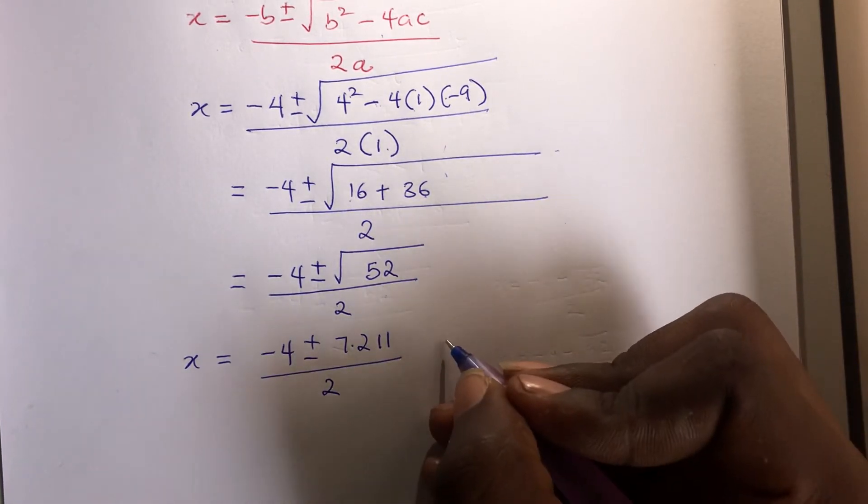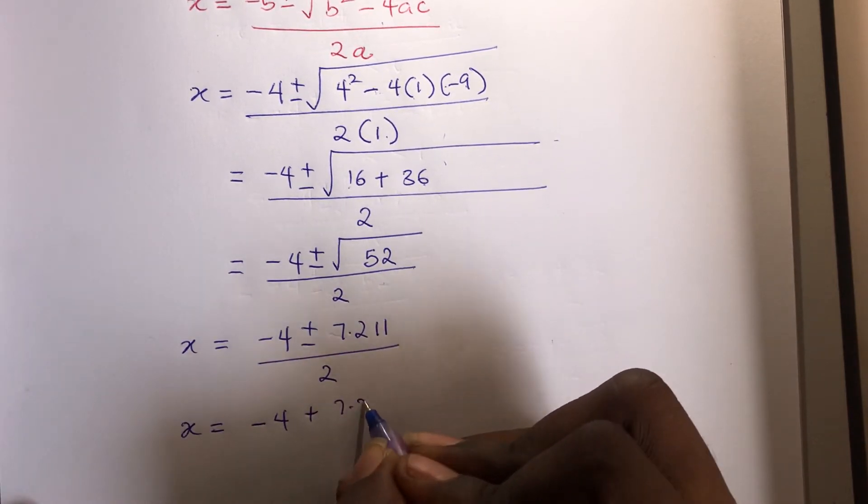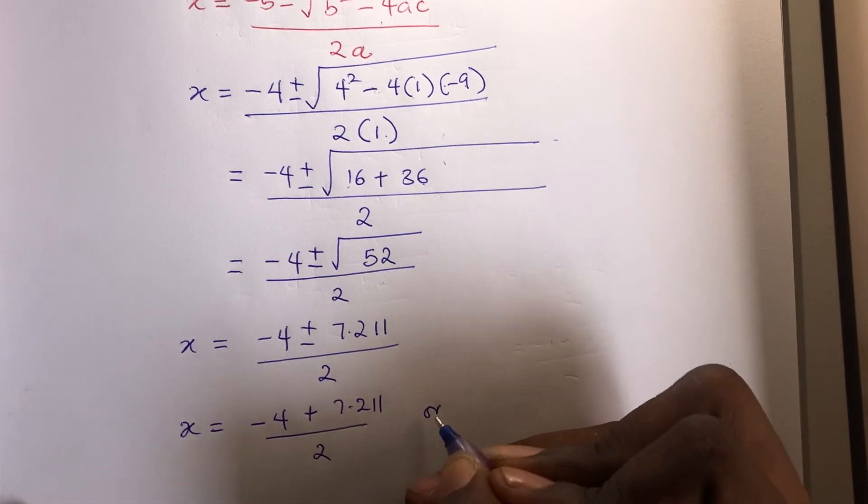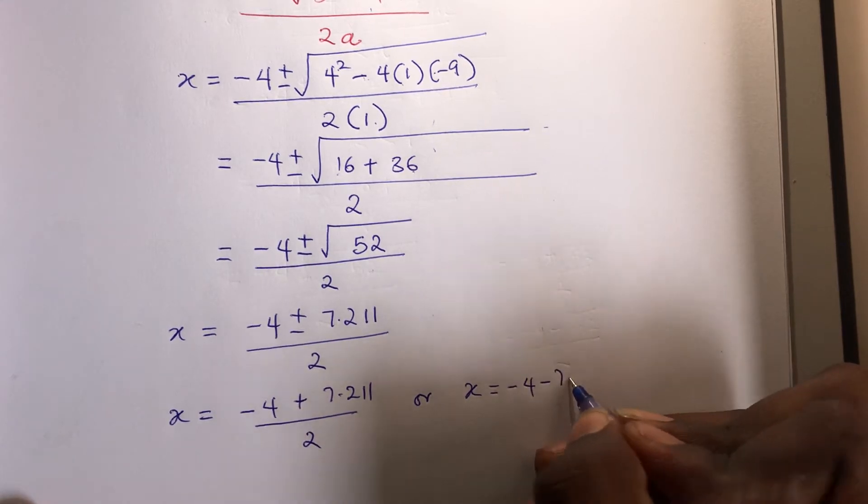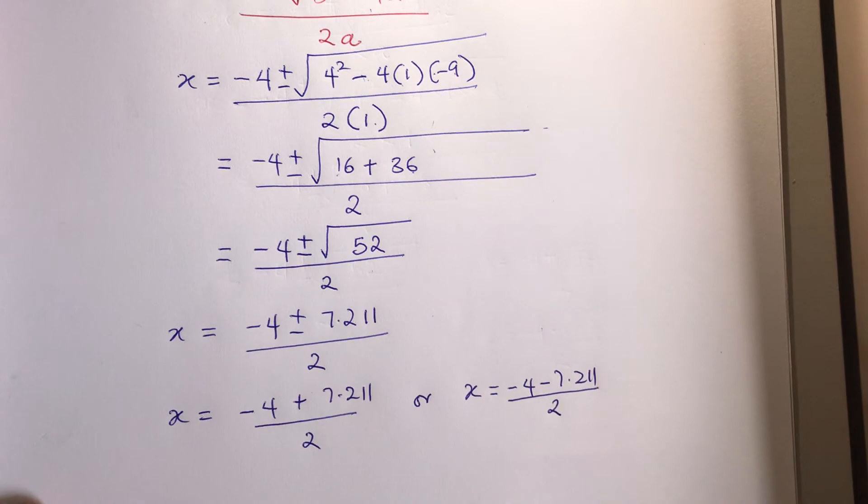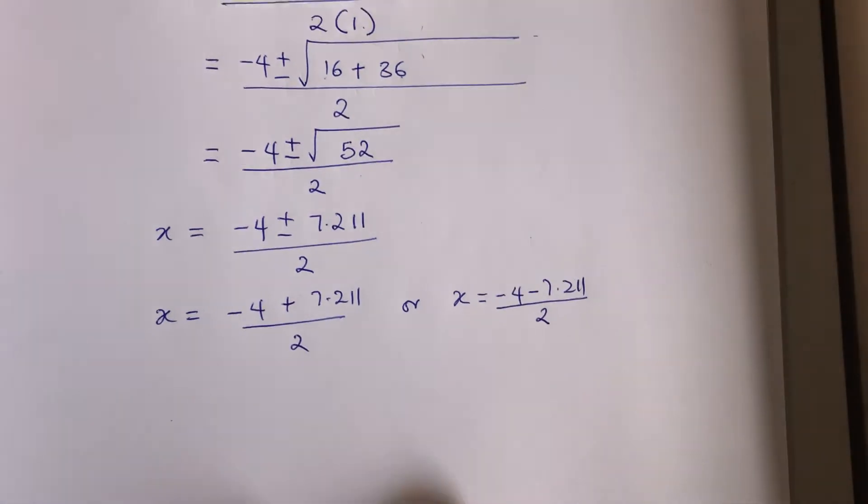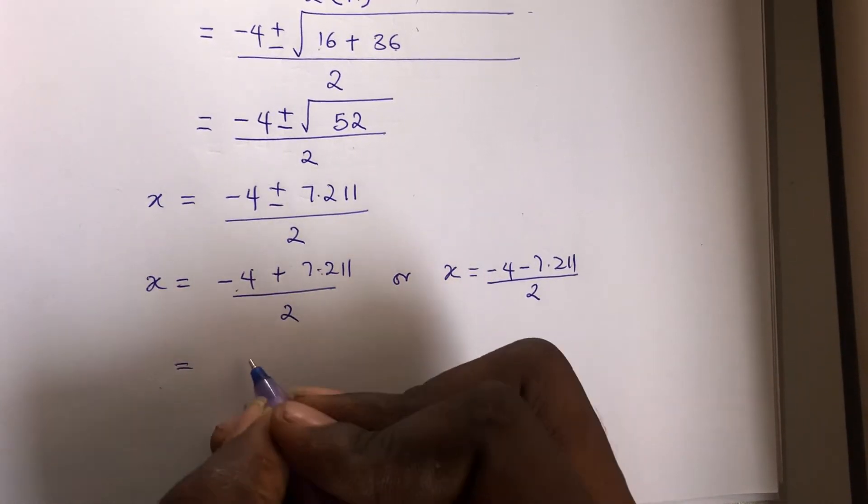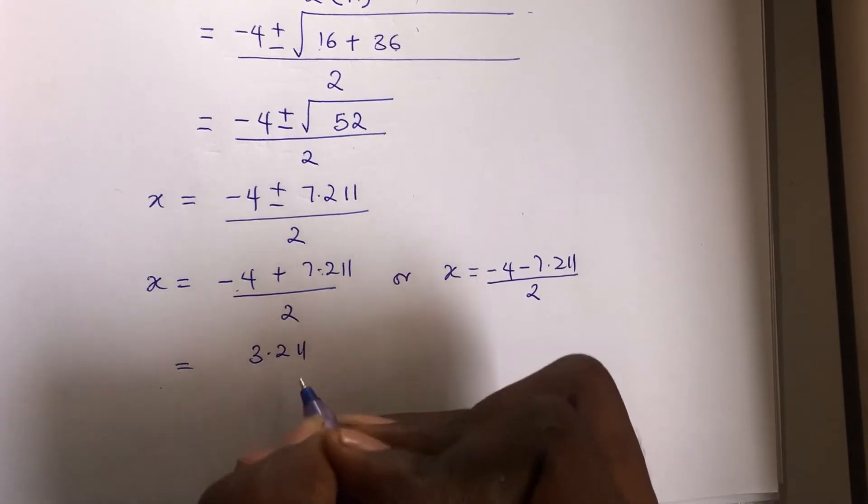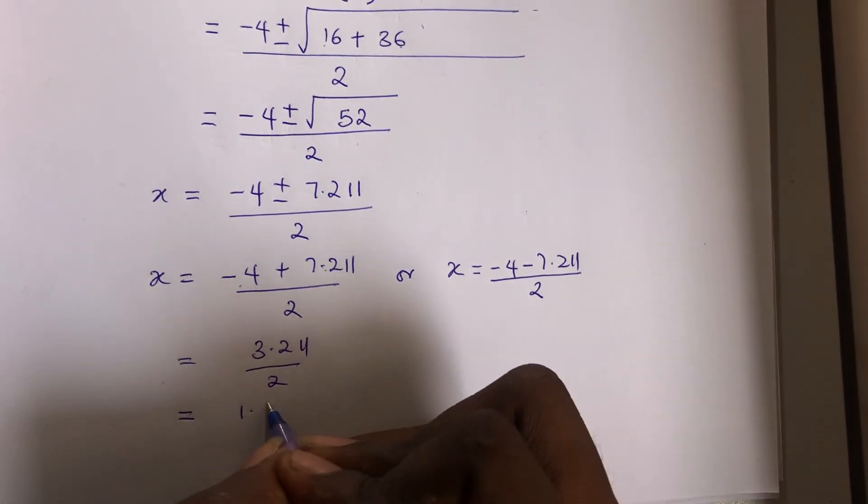That is x is calculated as x equals to minus 4 plus 7.211 over 2, or x is minus 4 minus 7.211 over 2. So as you know a quadratic equation always has two answers. So go ahead and solve the first one, which is this one here. So that minus 4 plus 7.2 is going to give you 3.211 over 2. If we divide this, this would give us 1.605.